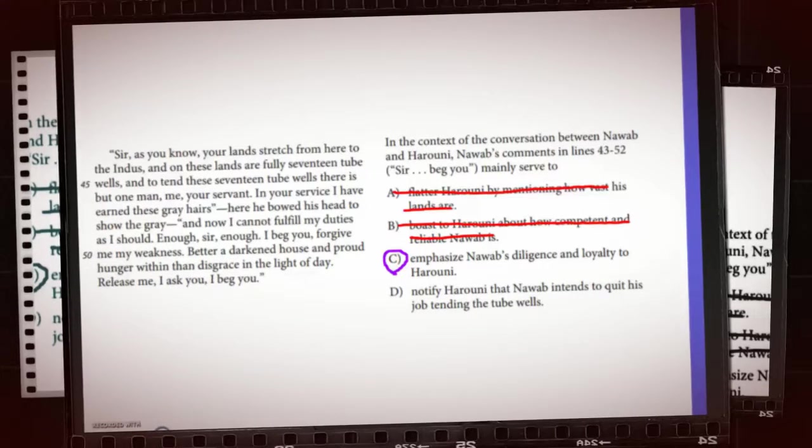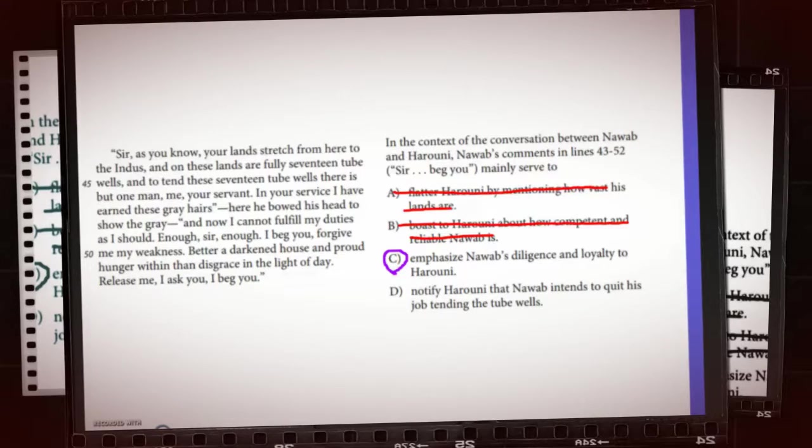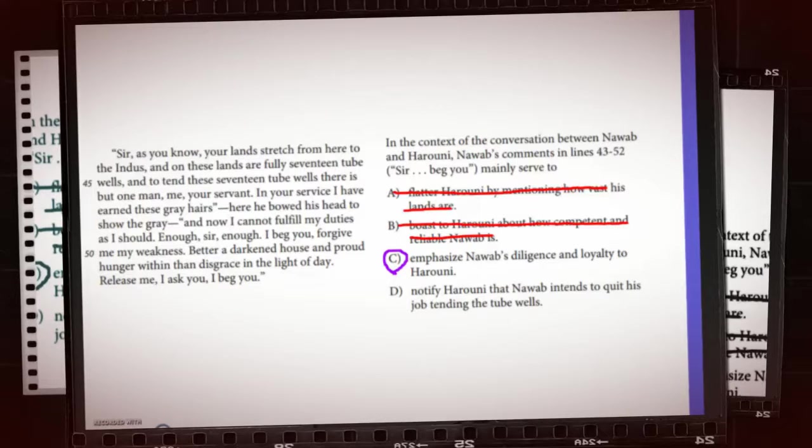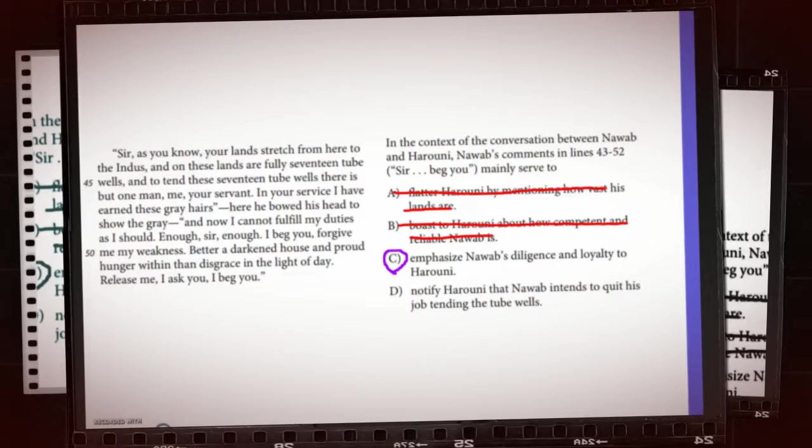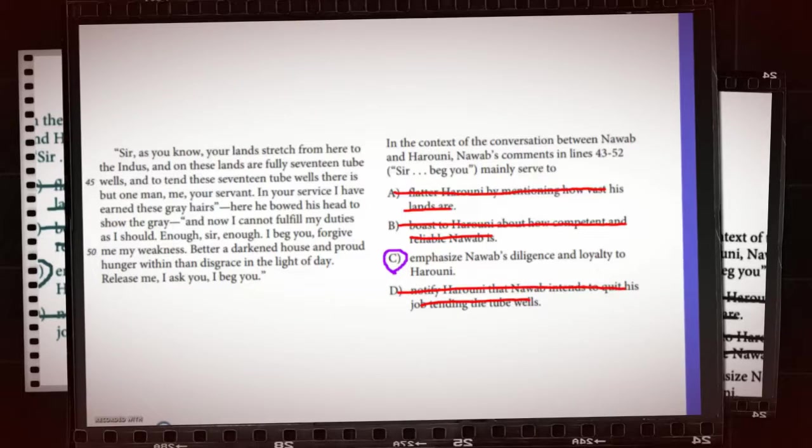And then answer choice D is not the correct answer because in lines 43 through 52, Nawab doesn't say that he intends to quit his job. He simply says that he can't do it very well right now and perhaps would like some help doing it. So that is why the answer is C.